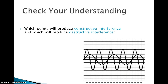Looking at a diagram with various labeled points: at point K, would there be constructive or destructive interference? At point M, both waves have negative value — both are below the equilibrium — so that would be constructive interference. At point G, both waves are positive, so that is also constructive interference.